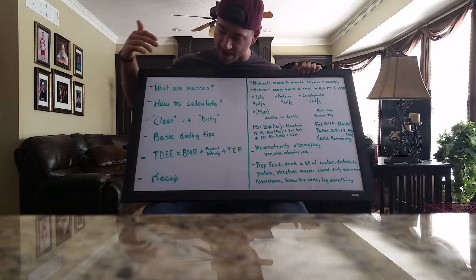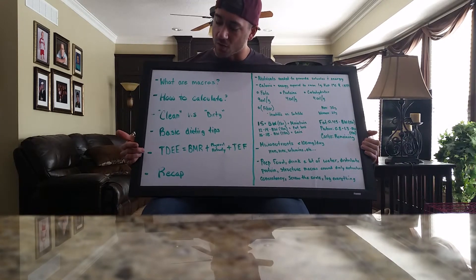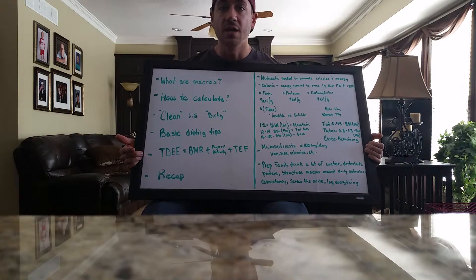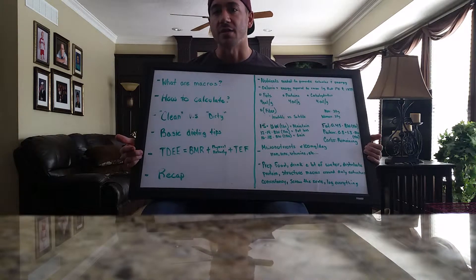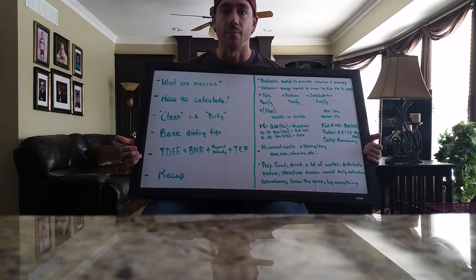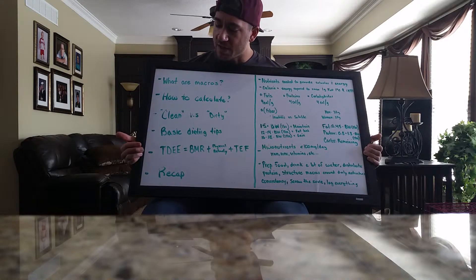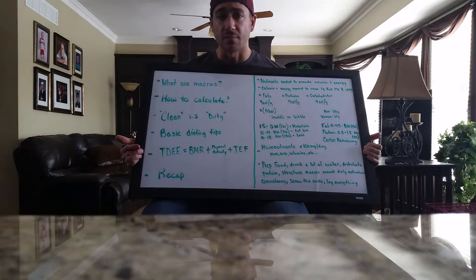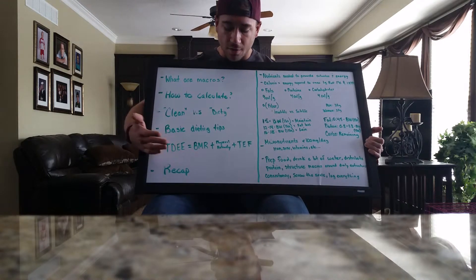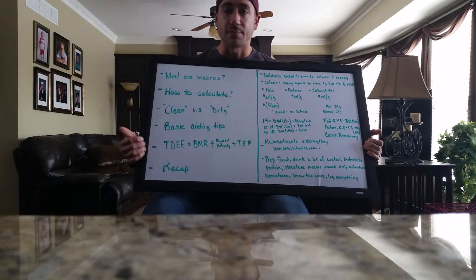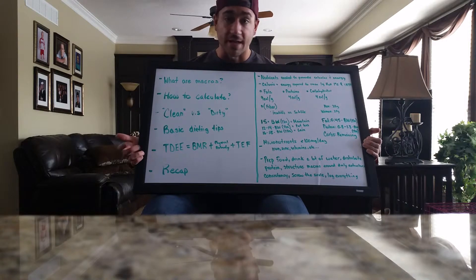When you calculate your macros, the overall goal is to manipulate the TDEE — your total daily energy expenditure. This is how many calories are needed to maintain your current state, whether that's to maintain your weight or what you have. This number is comprised of the BMR, your physical activity, and your TEF. BMR is basal metabolic rate — basically the energy your body uses just to live and breathe.